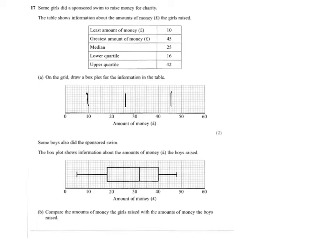I'll probably use a ruler in the exam and make sure these lines are the same length, but I'm just drawing it on the iPad with my finger, so it won't be quite as good as what you can do with a ruler. So lower quartile at 16 — that's just one mark ahead of the 15, just about right there. And finally the upper quartile at 42, so two marks past the 40.